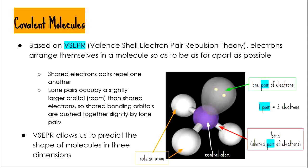A lone pair of electrons repels or takes up more room than a shared electron pair. When we say pair, it means two electrons. So when we talk about a shared pair of electrons, we're really talking about a bond — two electrons in a bond, with two different atoms each sharing one of their own electrons. A lone pair of electrons means it is not sharing electrons with any other atom; it is two electrons on the central atom. The VSEPR theory allows us to predict the shape of molecules in 3D.